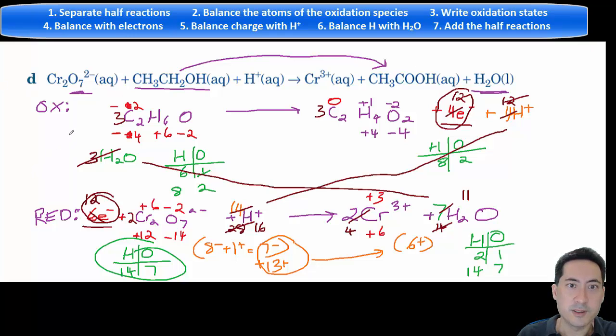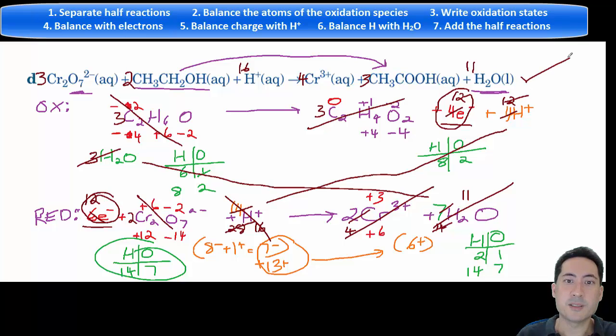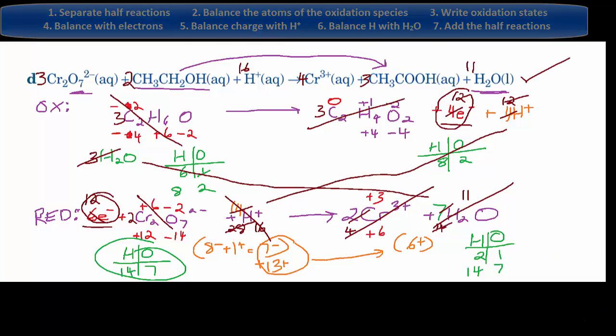So let's put this together then. So we have a 3 here. And we have a 4 here. And we have an 11 here. And that's the finished balanced equation.